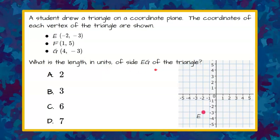So the first thing is we're going to plot all our points. We have E at (-2, -3). We start at the origin. It's negative, so we're going to go left negative 2 for X, and then down 3 for Y. So negative 2 left, down to negative 3, and that's our point E.